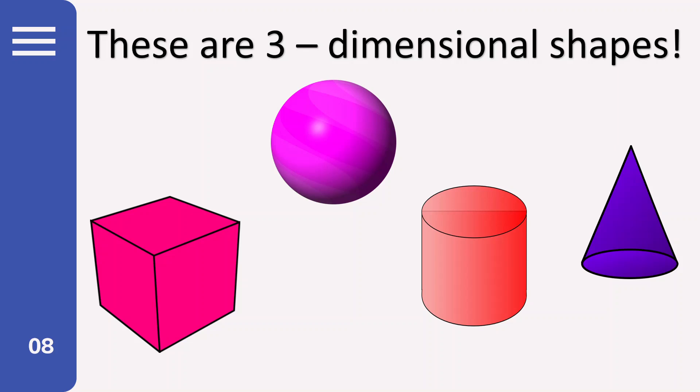Alright, now let's learn about three-dimensional shapes. So this is a cube. Are you familiar with Rubik's Cube? Yes. Alright, so look at the faces. The shape is a square. So there are actually six squares. When you put together six squares, you will form a cube.